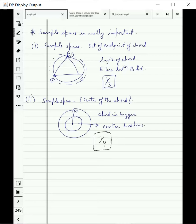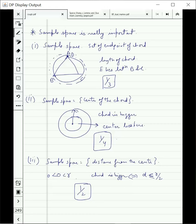And now if we get the third sample space, the distance from the center. In this case, the distance ranges between 0 and R and the chord is bigger if the distance is less than R/2. So this will give you a value of 1/2. So we have three different sample spaces. Depending on the sample space, we get three different answers. And none of them is incorrect.